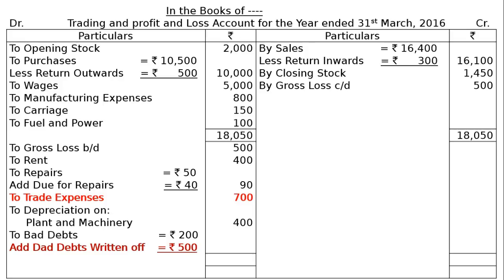The debit side totaling is rupees 2,790 and since the debit side is higher, we take this to the credit side. The difference gives a net loss carried down of rupees 2,790, which is then carried to the balance sheet.